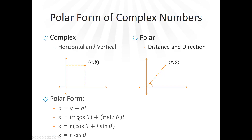Both terms have an r, so we factor it out. The form we'll use most frequently is r times the quantity cosine theta plus i sine theta. That's what we think of when we say a complex number is in polar form. You may also see this abbreviated as r cis theta, where cis is just shorthand for cosine theta plus i sine theta.